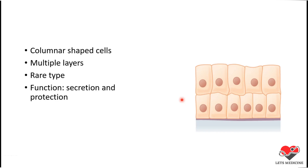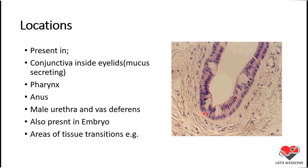It is present in only a few locations in our body. The functions it performs are mainly secretion and protection. Location-wise, it is mostly present in the conjunctiva of the eyelids, where it performs the function of mucous secretion, keeping the eyes lubricated. It is also present in the pharynx, again performing mucous secretion responsible for lubrication and mucus production in the respiratory tract. It can also be present in the anus, male urethra, and vas deferens.